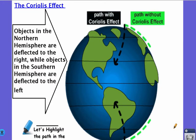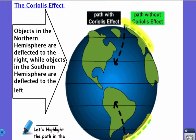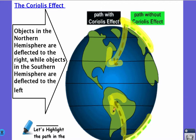Here we can see an image of the Coriolis effect. Without it, if the winds and ocean currents were going in a straight line, you could see that straight line if the Earth wasn't rotating. But because the Earth is rotating, the Coriolis effect causes the ocean wind and current to curve, as you can see here.